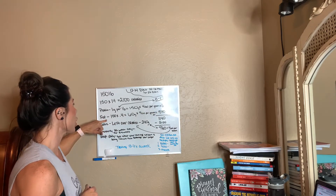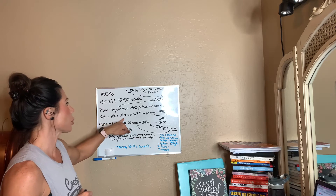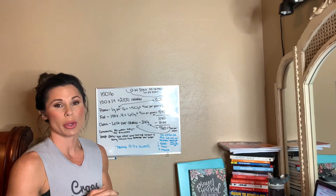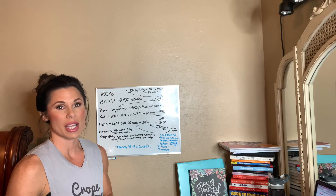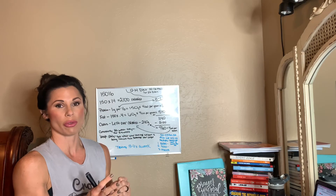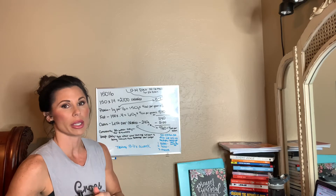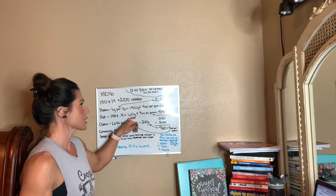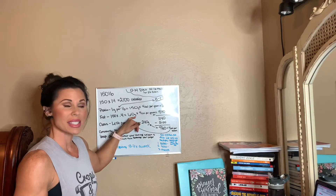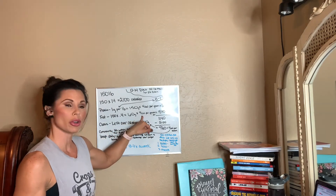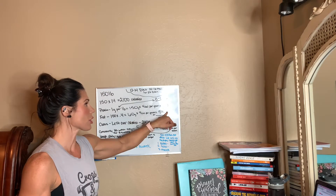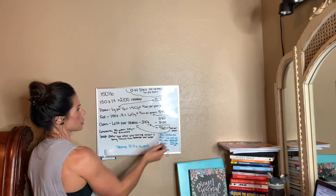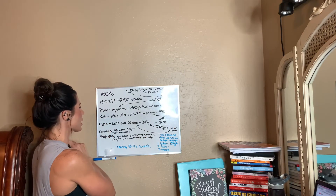For fat, we take 150 times 0.4. A range of 0.35 to 0.4 is a good hormonal number to base your fats on, depending on your current weight. Going with 0.4 gives us 60 grams of fat. Fats have nine calories per gram, so 60 times nine equals 540 calories.